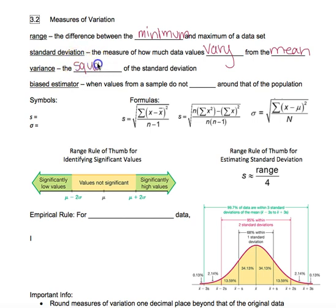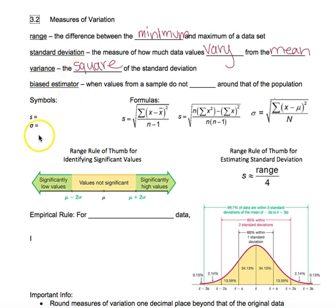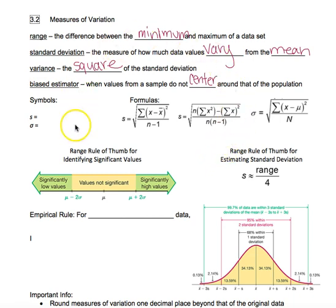Variance is the square of the standard deviation. We use variance because oftentimes we need to make sure that data is positive, and when we square things, it's always going to be that way. We also talked about resistant statistics, and in this section we're talking about estimators — classifying them as either biased estimators or unbiased estimators. A biased estimator is when the values from a sample do not center around that of the population as a whole. Your reading gives you a list of which are biased and which are unbiased, so make sure you know those.